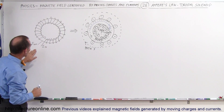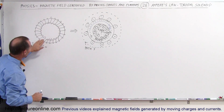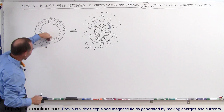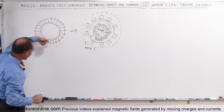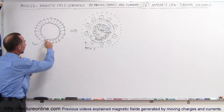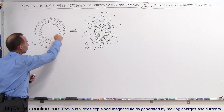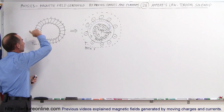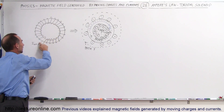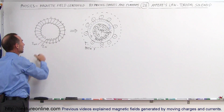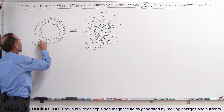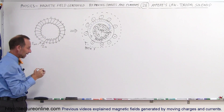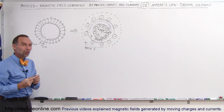Notice that the current goes into the coil, comes around the backside and back up, coiling all the way around. When it comes to the back it comes out the other way — so current in on one side, current out on the other.